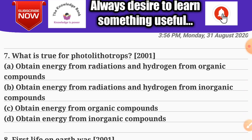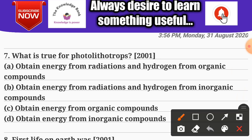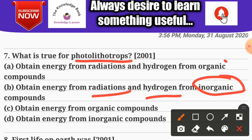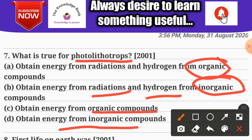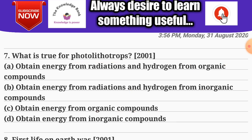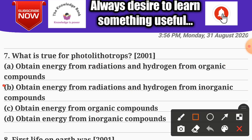Question number seven: what is true for photo lithotrophs? Options: A) obtain energy from radiations and hydrogen from organic compounds; B) obtain energy from radiations and hydrogen from inorganic compounds; C) obtain energy from organic compounds; D) obtain energy from inorganic compounds. The correct answer is B — obtain energy from radiations and hydrogen from inorganic compounds.